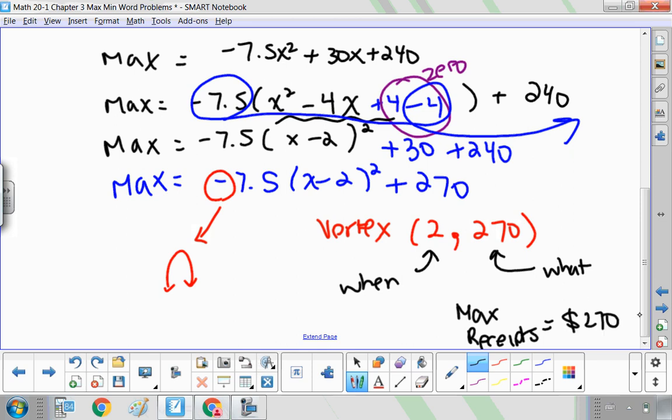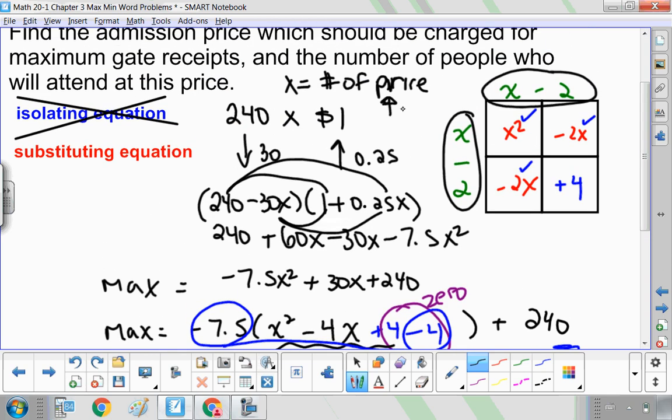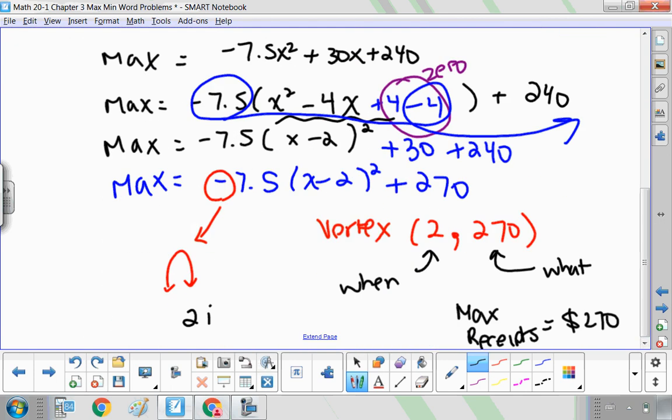And 2 is the number of increases. So I'm going to have 2 increases in price. So if I look up here, X is the number of price increases. So if I increase the price by multiples of 25, and I do that 2 times, my new price is going to be, so 2 increases. My price is going to be $1 plus 2 increases of $0.25, which will be $1.50.